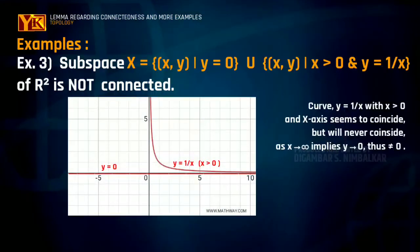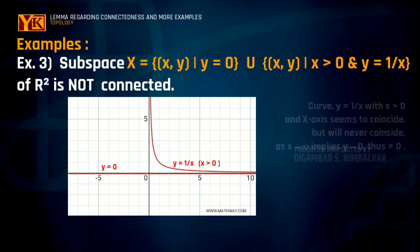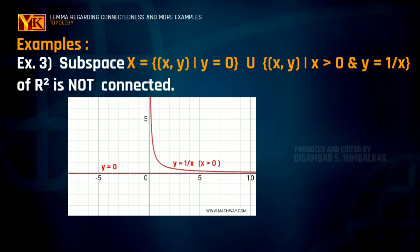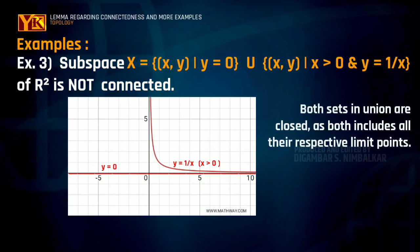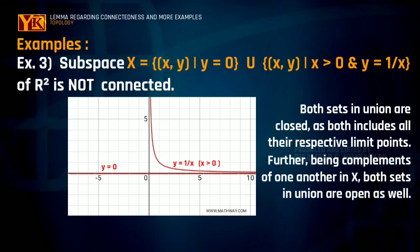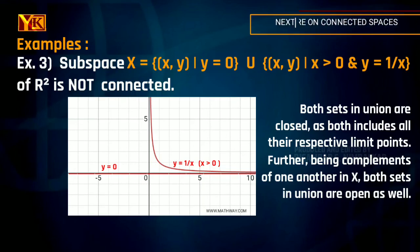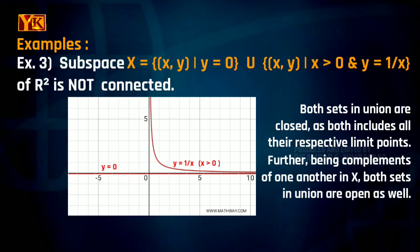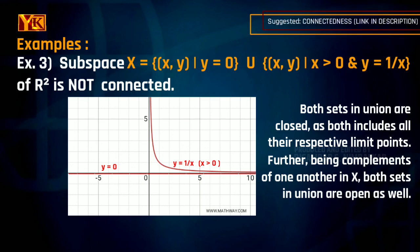If you draw a diagram, you can easily see that the space is not connected. The set {(x, y) : y = 0} is the entire x-axis, and the second set is a curve in the first quadrant. Both sets are closed as they include all their respective limit points. Further, these two sets are complements of one another and thus open as well. So we have proper subsets of space X that are both open and closed, which does not satisfy the definition of connectedness. Thus space X is not connected.